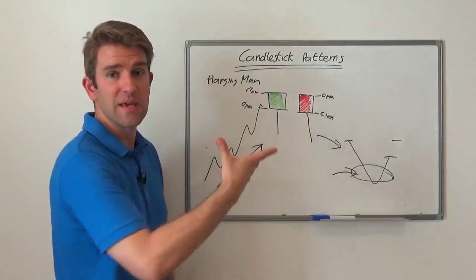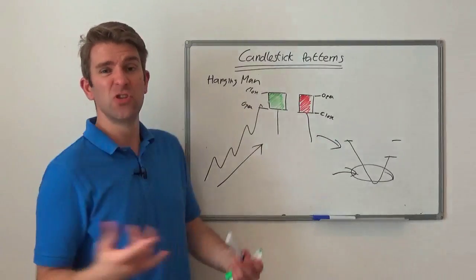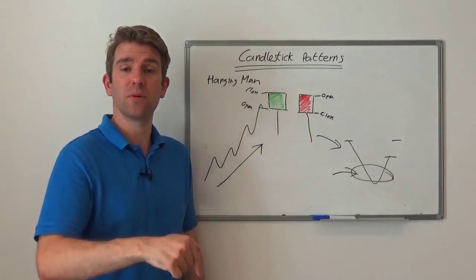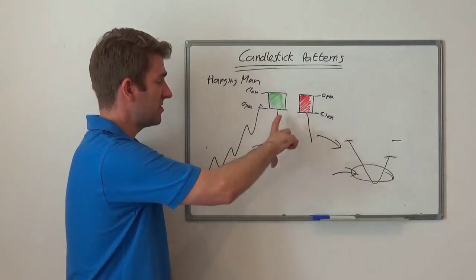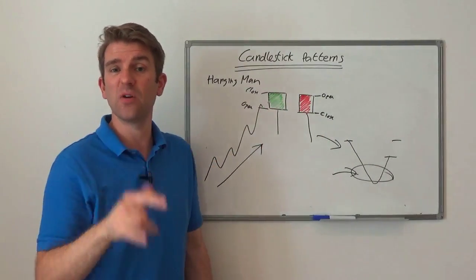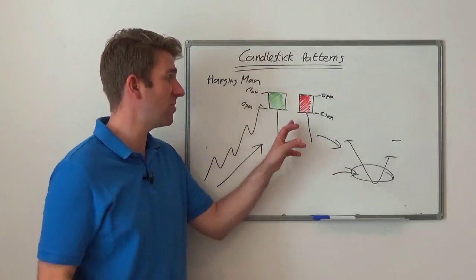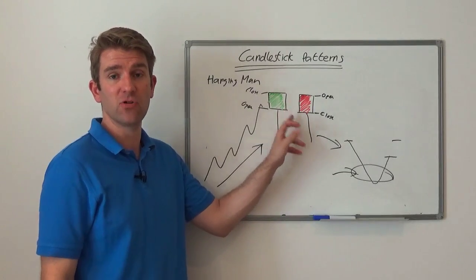The official line is that it's twice the size of the body. So in other words, that's got to be twice the size of that to be an official hanging man. Do you think that matters? Let me know in the comments below whether that's important, whether it's got to be double or whether you think you can get away with being smaller or whether it's got to be more than that. I'd love to hear what your thoughts on this are and if you use this candlestick pattern regularly in your trading.